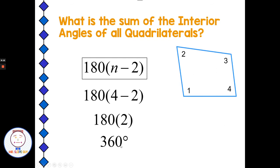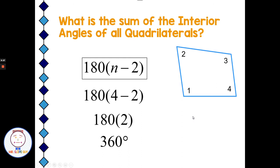Using 180 times (n minus 2), we put in 4 for the number of sides. Four minus 2 is 2, and 180 times 2 is 360 degrees. So angle 1 plus angle 2 plus angle 3 plus angle 4 add up to 360. We can't find how much each angle is because this is an irregular polygon — we can't just divide by 4. If it were a regular quadrilateral like a square, all angles would be equal, but a rectangle has equal angles but not equal sides, so it's not regular.